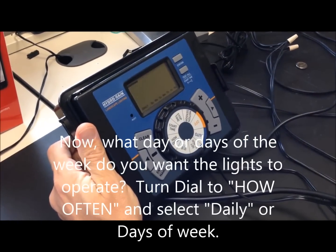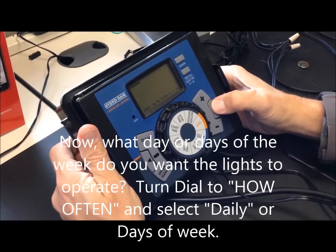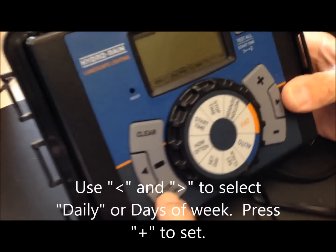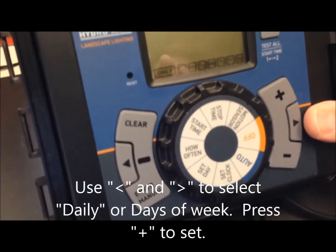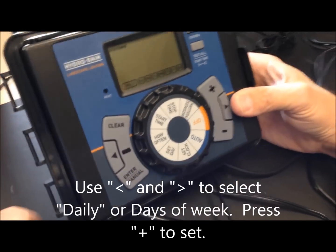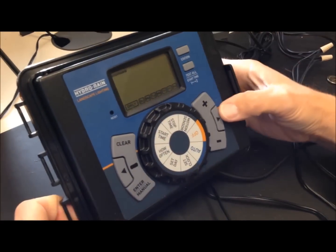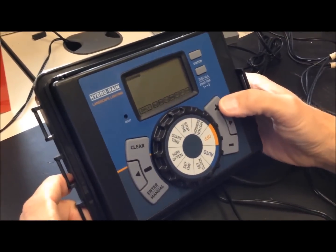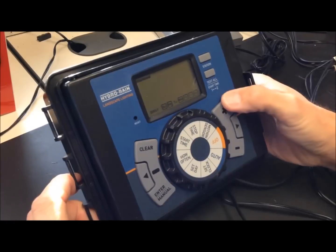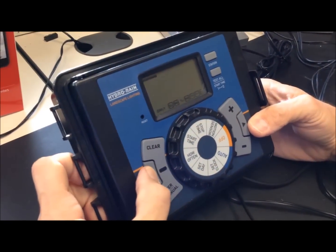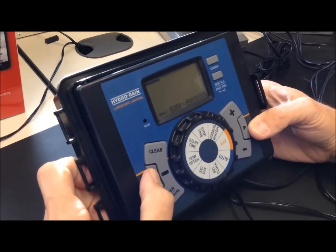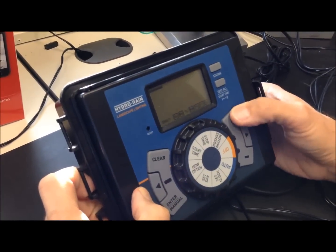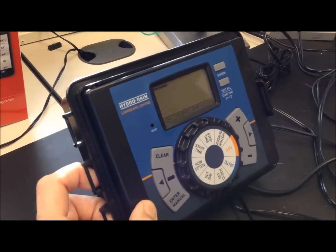How often do you want the timer to come on? Most people want it to come on daily. So while daily is flashing, you hit enter. If you don't want it to come on every day, you can select a specific day of the week just by moving to that position and hitting plus or minus. But most people want it to come on every day. So just go to daily, hit plus. We're good to go.